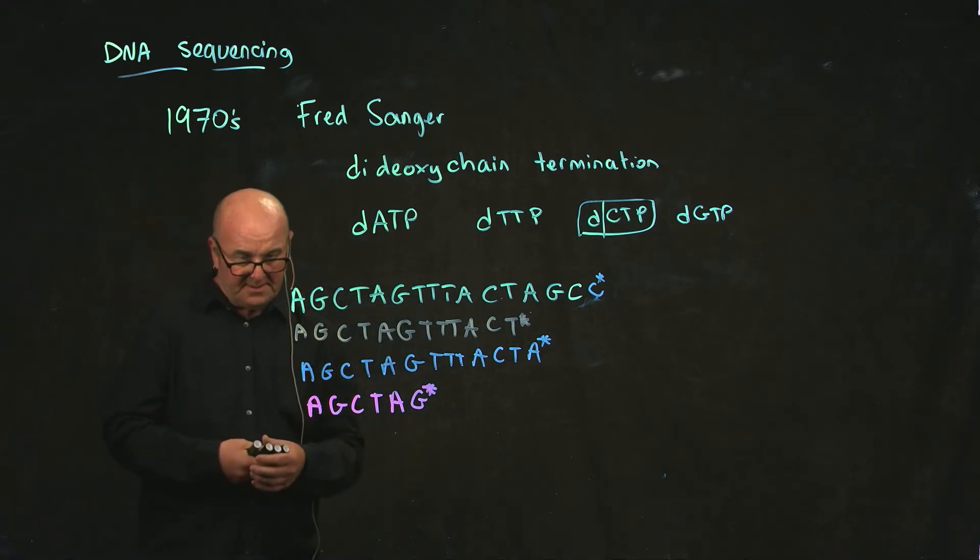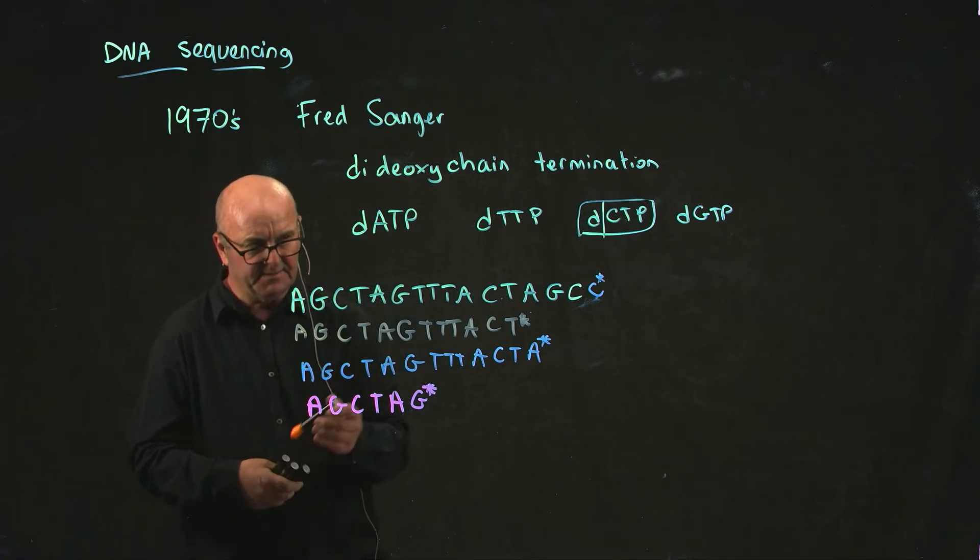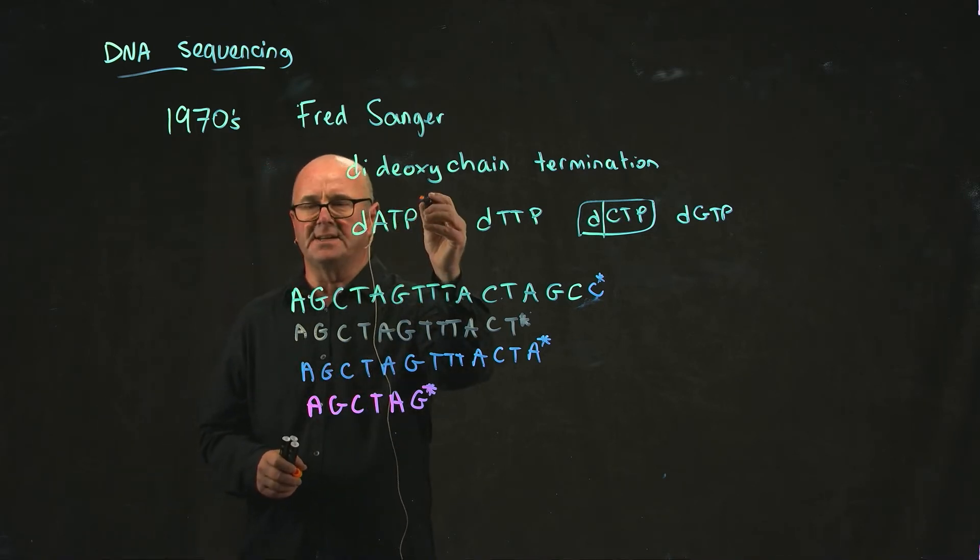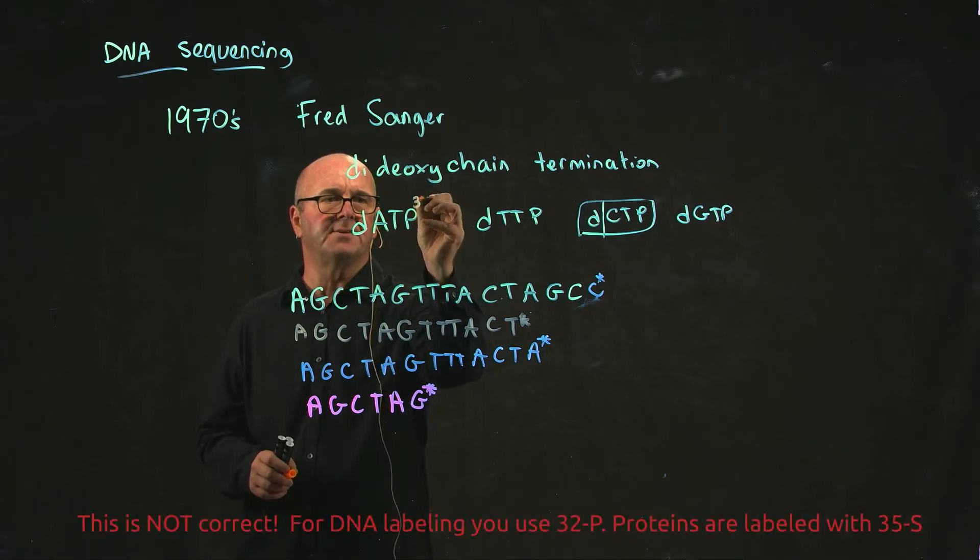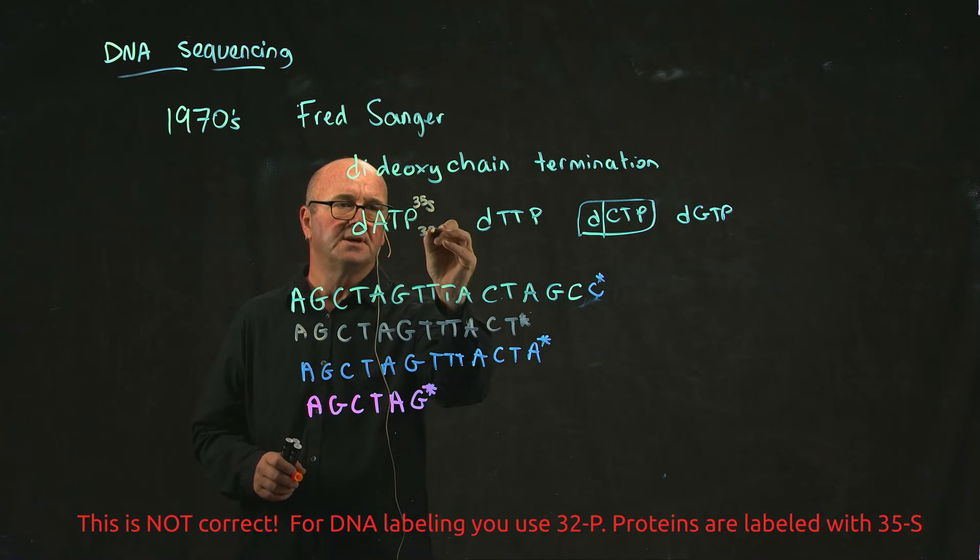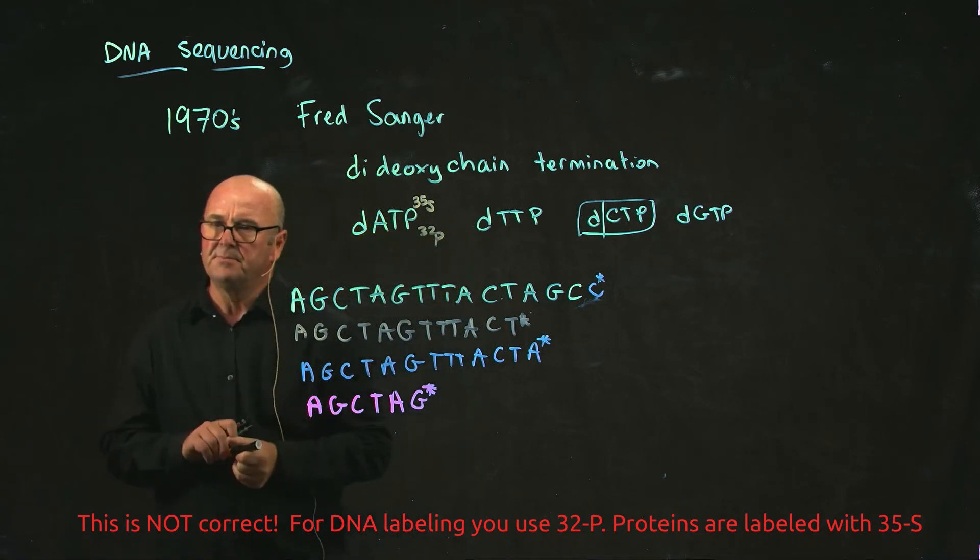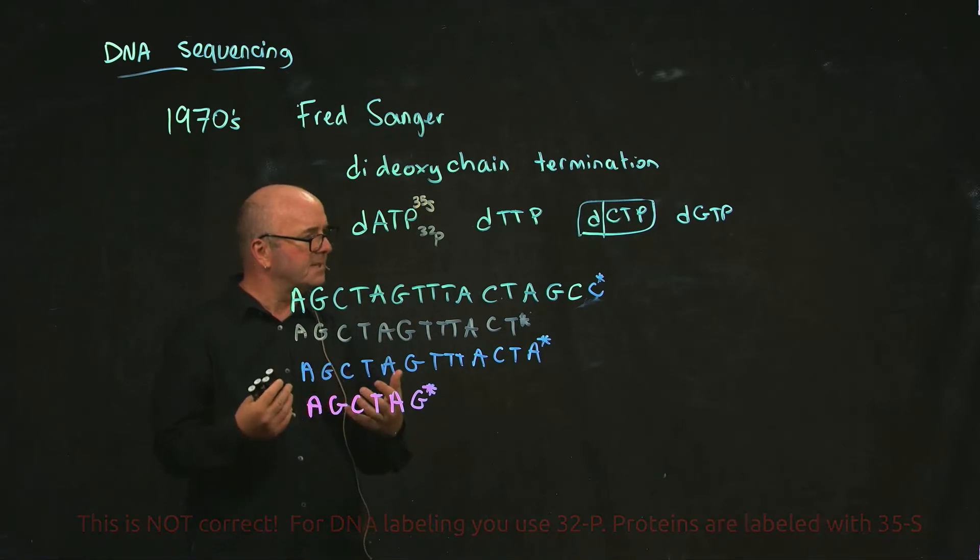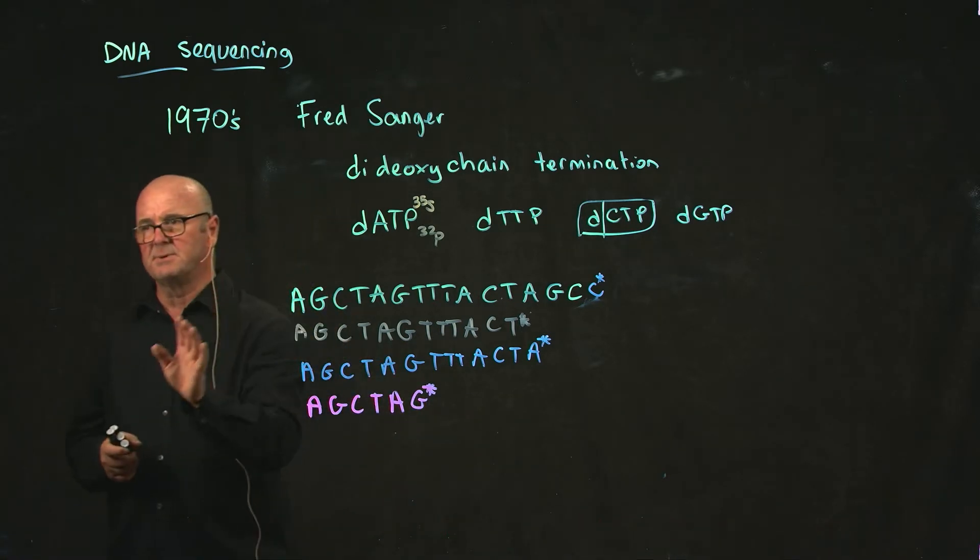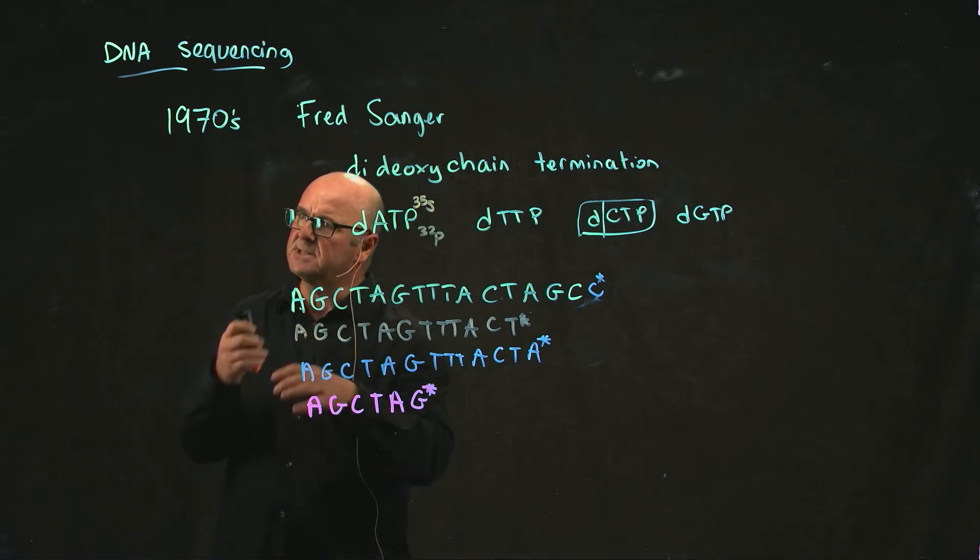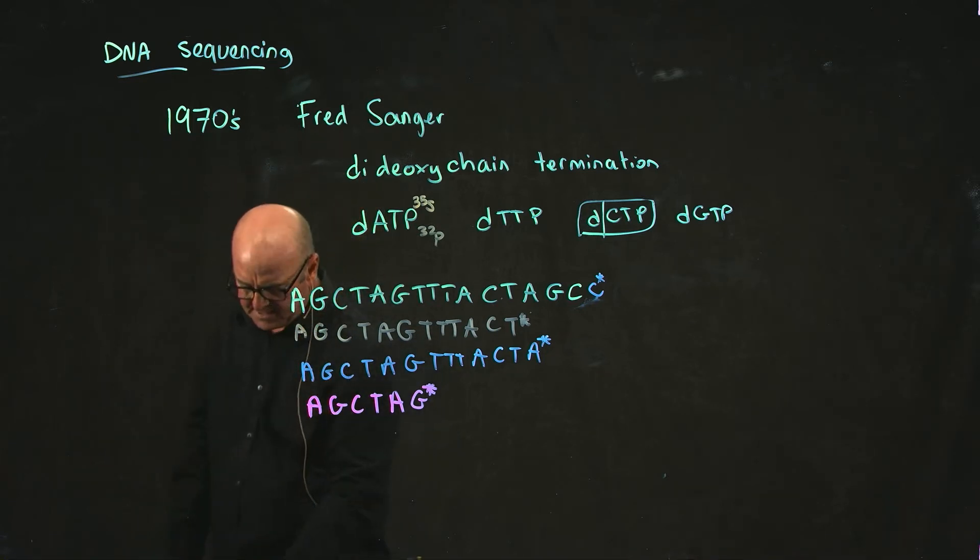If at the same time as doing that you include radioactivity, so we have for example dATP that's labeled with 35 sulfur molecules or 32 phosphorus molecules, then you can use a pretty simple radioactivity detection technique where you just expose a photographic film to the DNA molecules to see how the DNA looks.